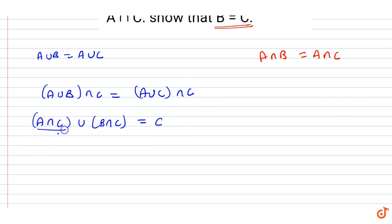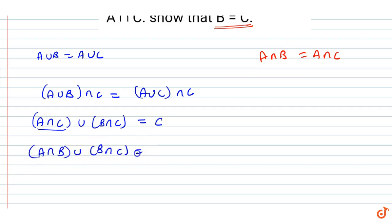Here we say A intersection C is equal to A intersection B, so we have A intersection B union B intersection C, and that equals C. I have to substitute values according to this.